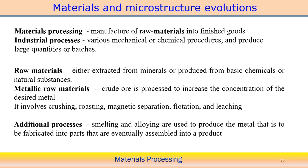If we look at crude ore directly, we cannot utilize it, so it involves several steps — for example, crushing, roasting, magnetic separation, flotation, and the leaching process. We need to follow these particular processes to convert the ore into usable raw materials. Apart from this, we should go through additional processes. Smelting and alloying are sometimes used to produce the metal, which is then fabricated into parts and eventually assembled into a product.